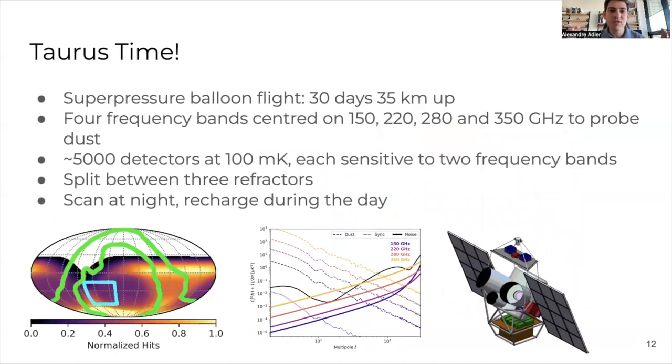The idea is to take a new kind of balloon called Super Pressure Balloon, which is the one that SuperBIT and EUSO flew with, send it from New Zealand for a month, 35 kilometers up. We would like to observe the CMB at four frequency bands centered on 150, 220, 280, and 350 gigahertz, which is where the dust signals.